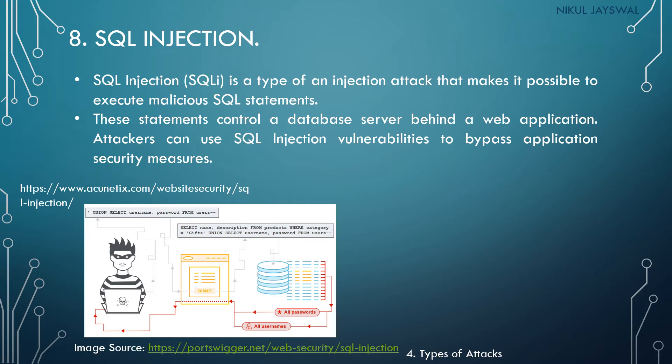If there is any weakness in the application program, the attacker will use that weakness to attack the database through SQL injection statements and identify the data from the database. As seen in the figure, there is one application program and a database. We can run the SQL statement in between the application program and database and access the data stored there. That is all about SQL injection.